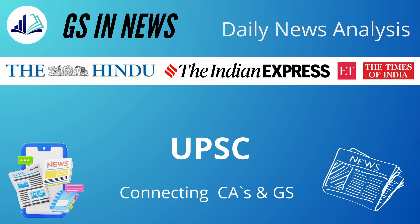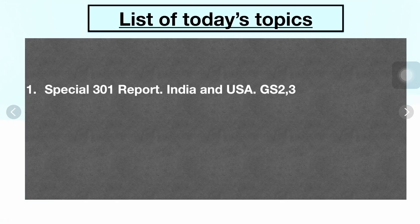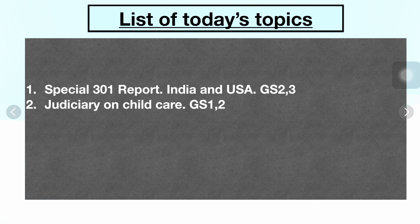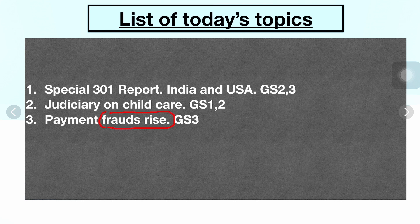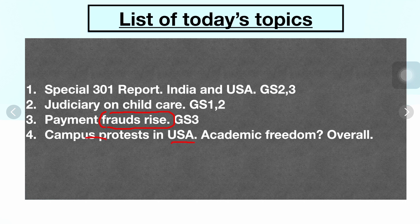The topics covered in this series are those appearing in daily newspapers — how they can be beneficial to increase your knowledge, help you understand topics, and use them in answers, discussions, or interviews. Topic one is the Special 301 Report and its effect on India-US relations and economic ties. Topic two is the judiciary on child care. Topic three is the rise in payment fraud through digital channels. Topic four is campus protests in the USA regarding Palestinians currently ongoing at several US universities — is it academic freedom or a larger design?